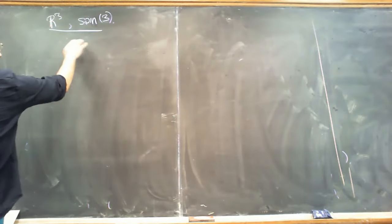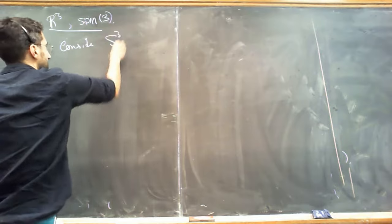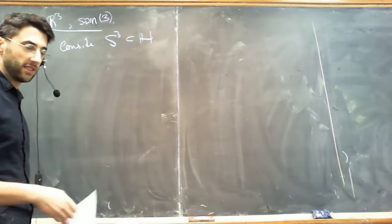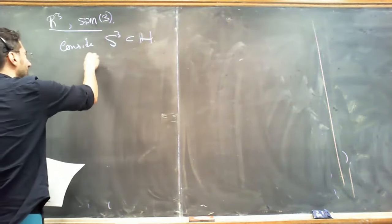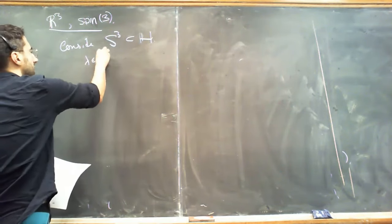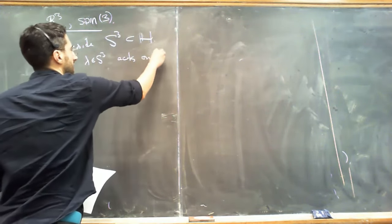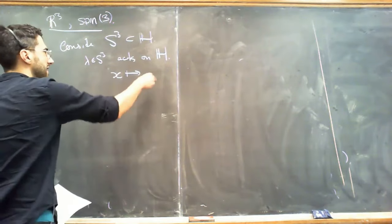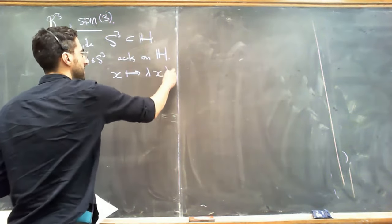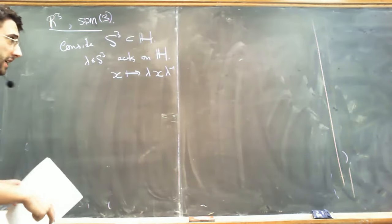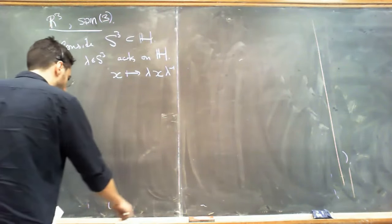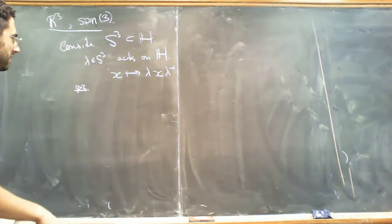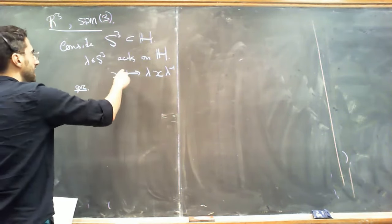First, let's consider S3. This lives inside of the quaternions as the quaternions of length one. An element of S3 acts on the quaternions by conjugation: some quaternion x gets sent to λ x λ⁻¹. Let's get a picture for what this action is.